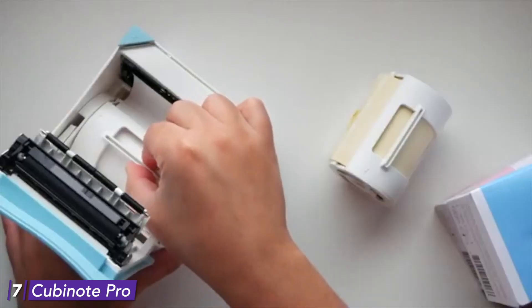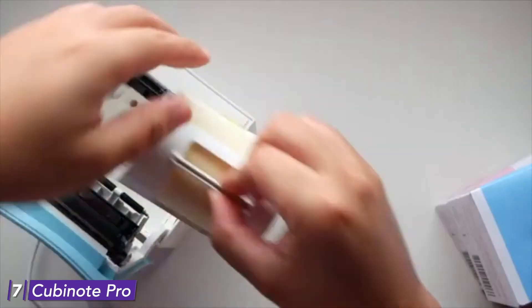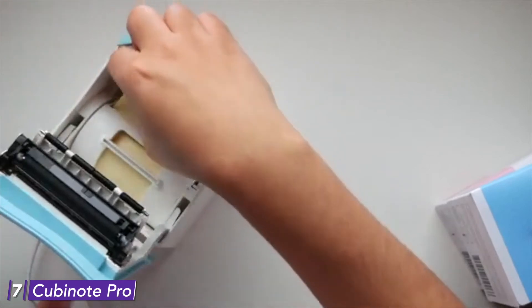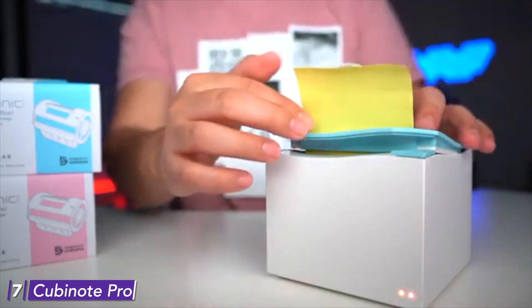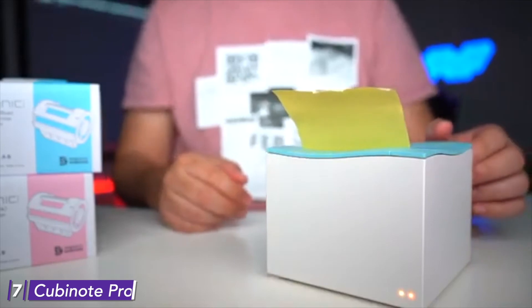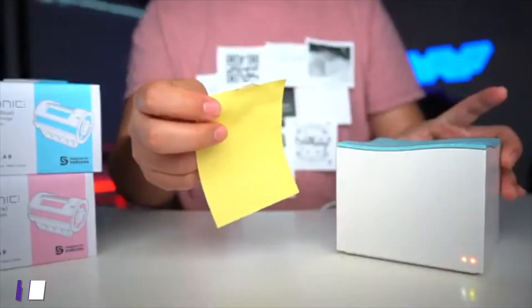Cubinote App. The app is compatible with both Android and iOS software. Pair your phone with the device via Bluetooth or Wi-Fi and start printing. It's that simple. Be as creative as you can.